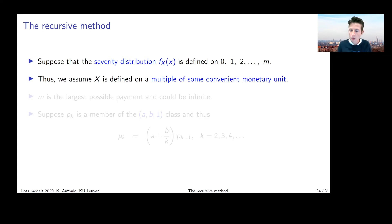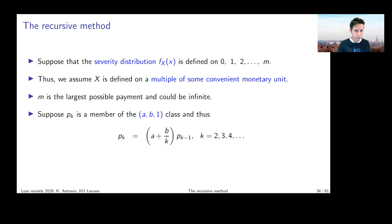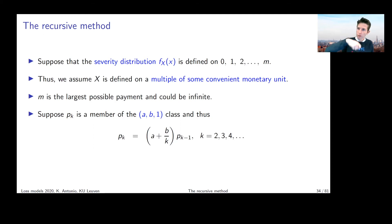So you're going to approximate the distribution of X, which is originally a continuous distribution on the positive line — a typical severity distribution — and pretend as if it's a kind of discrete severity distribution. Suppose that p_k, the probability function of the number of terms N in the compound sum — the random number of terms — is a member of the AB1 class.